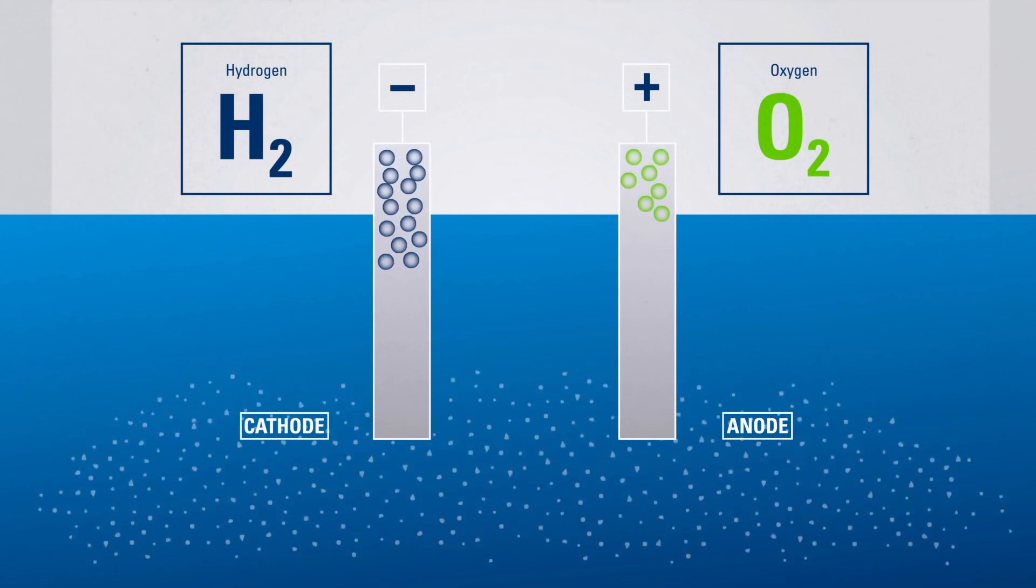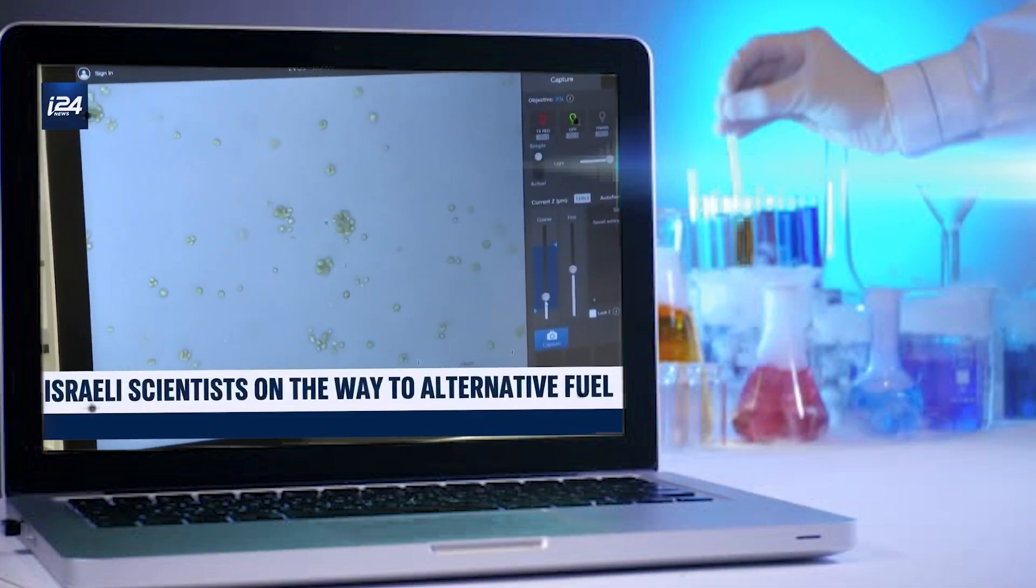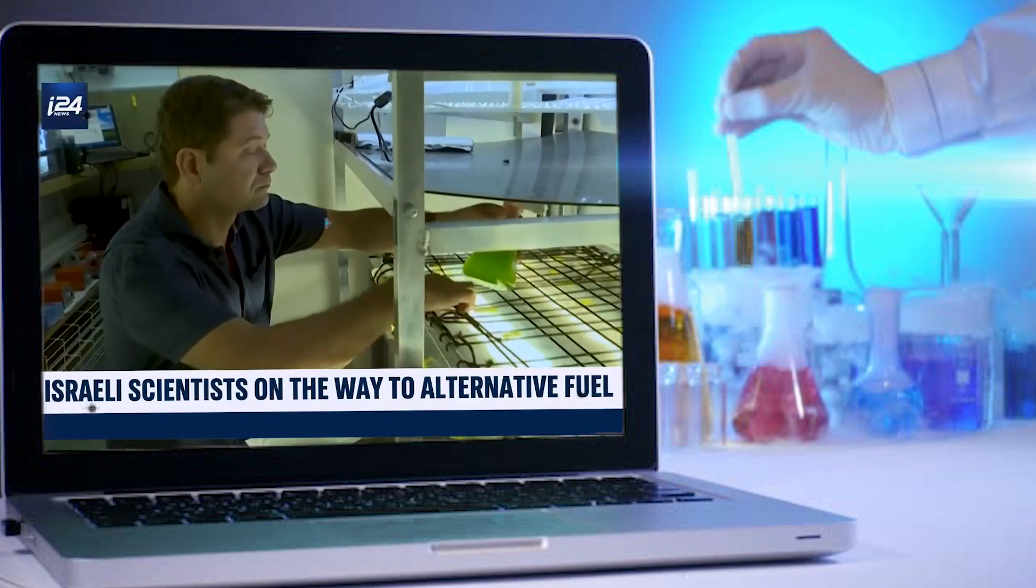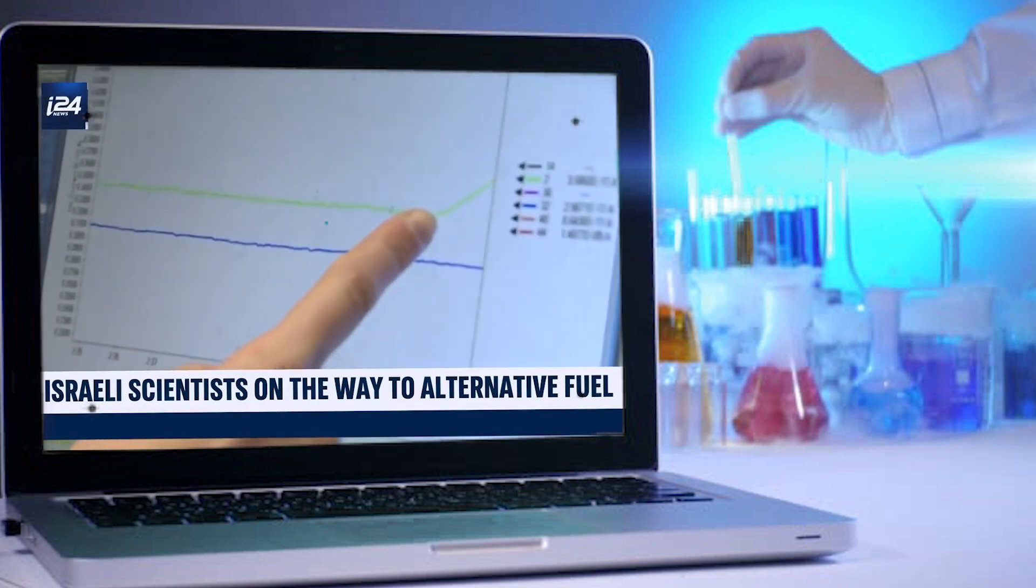However, the Tel Aviv University research team's breakthrough offers hope. Their method, if scaled successfully to industrial levels, could potentially revolutionize green hydrogen production by offering a cost-effective alternative.